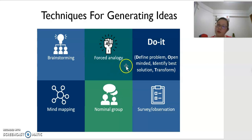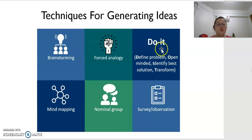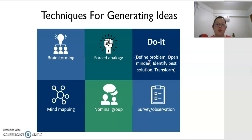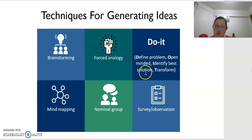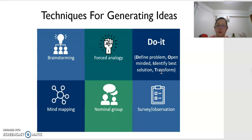Another technique is DOIT. First, define the problem. Then open your mind and start thinking about what you can do to solve it. You might generate a few ideas, then identify which is the best solution. After that, you change — change the product, the service, or even the process of producing the product.